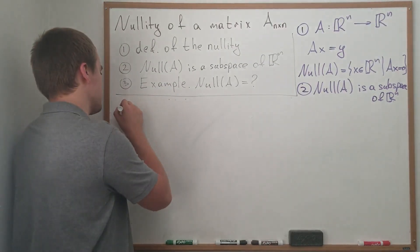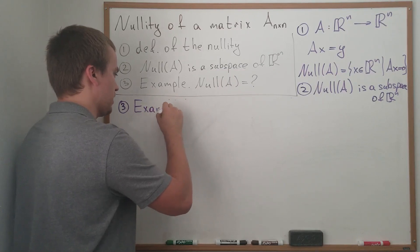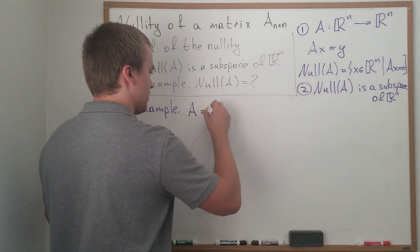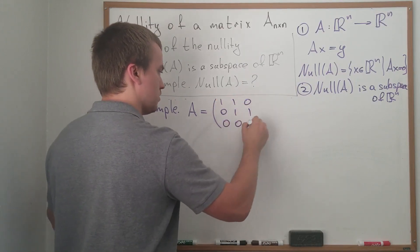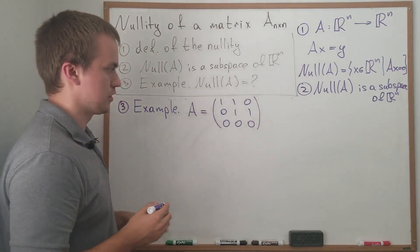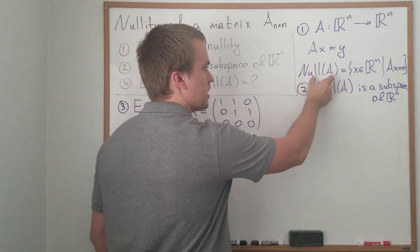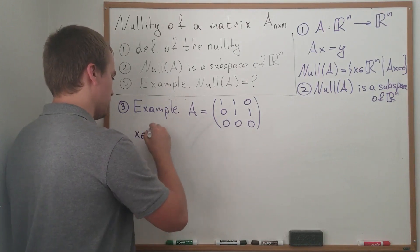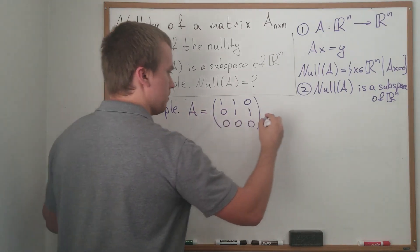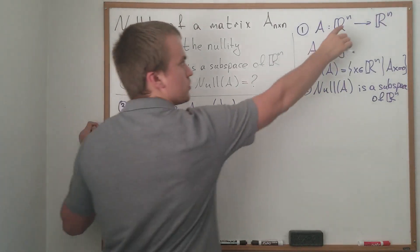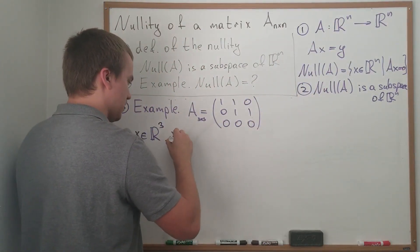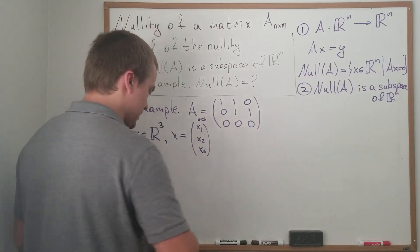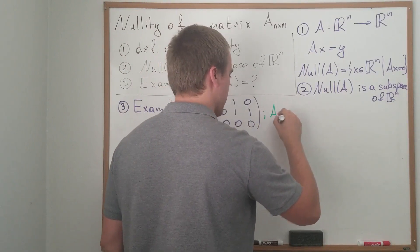Now I want to show a concrete example. Given a matrix, I want to find its nullity and the corresponding basis of that nullity. Let's say we're given matrix A equals [[1,1,0],[0,1,1],[0,0,0]]. We want to find null(A). We take any vector X in R³ — since A is 3 by 3 — with general form X = (x₁, x₂, x₃). Then X belongs to null(A) if and only if AX equals zero.